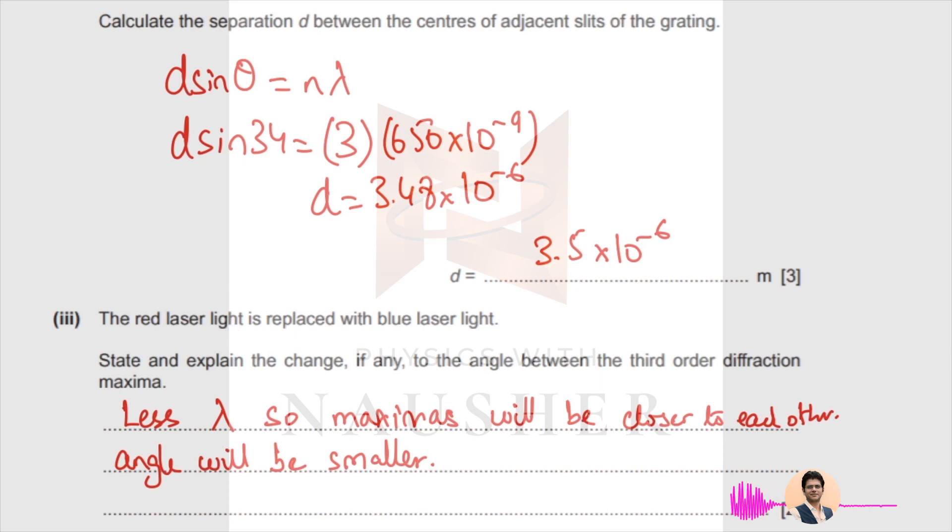When you replace the red light with blue light, that means you've got less wavelength, so the maximas will be closer to each other. The angle will be smaller because d sin θ = nλ, so sine theta is proportional to lambda.